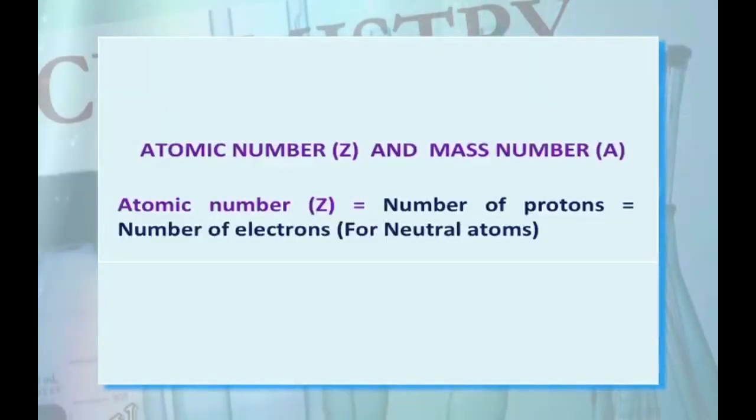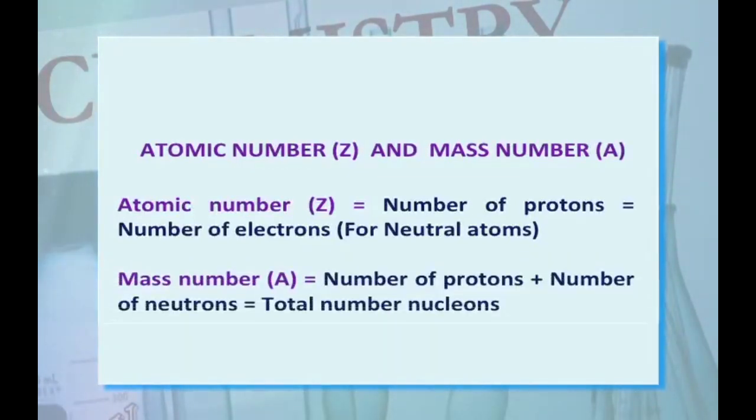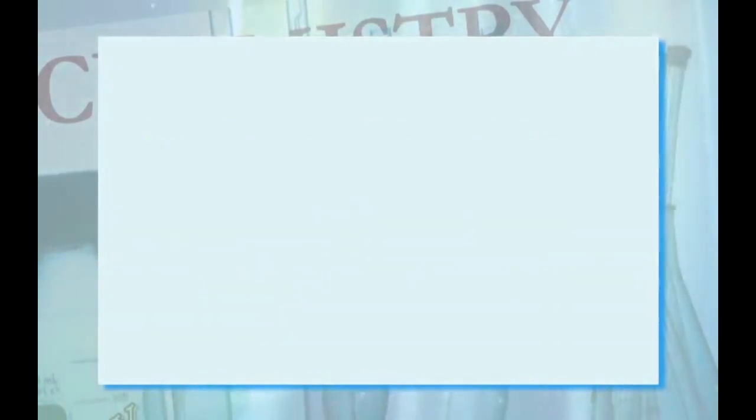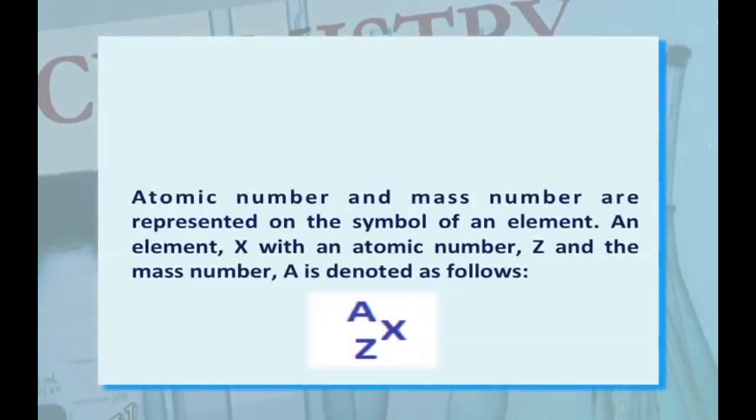Now, the next concept is atomic number and mass number. Atomic number is equal to number of protons, equal to number of electrons for neutral atoms. Mass number is equal to number of protons plus number of neutrons, equal to total number of nucleons. Atomic number and mass number are represented on the symbol of an element. An element, suppose X, with atomic number Z and mass number A is denoted as A on top, Z on bottom, followed by X.